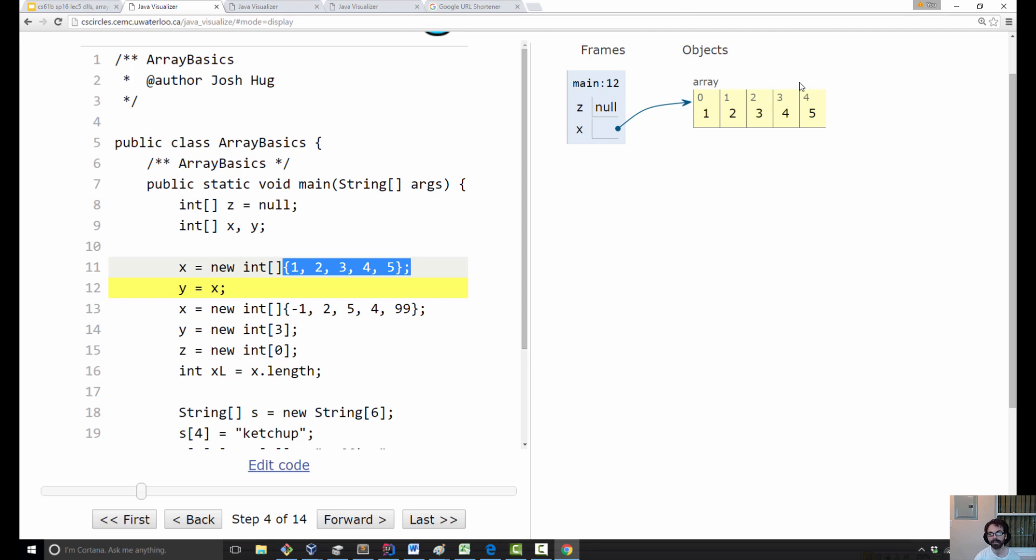Notice that the visualizer does not explicitly show the integer that stores the length of an array, though it does nonetheless exist, at least in a typical implementation of Java. So you can imagine there's a little five up here, but not yet.